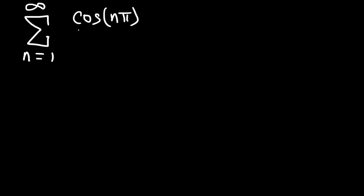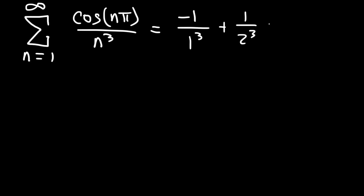Let's go ahead and do an example problem. Let's say we have the series cosine(nπ) divided by n³. Would you say the series is absolutely convergent, conditionally convergent, or divergent? What do we know about cosine(nπ)? When you plug in 1, you get cosine(π) which is −1. If you plug in 2, cosine(2π) is 1. If you plug in 3, it's −1 over 3³, and so forth. That's the pattern of what we have here.